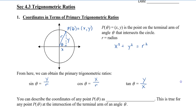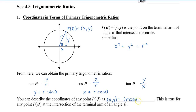One useful thing here is that I can multiply both sides by R and get a value for Y. So we can say that Y is equal to the radius times sine theta, and X is equal to the radius times cos theta. So now we can describe the coordinates of any point P theta as (R cos theta, R sine theta). This is true for any point P of theta at the intersection of the terminal arm of an angle theta — any point that's on the circle.